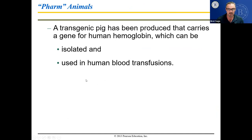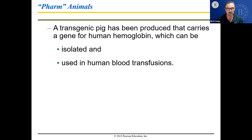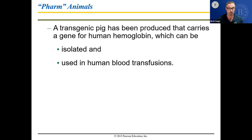A transgenic pig has been produced that carries a gene for human hemoglobin, which could then be used for blood transfusions. The idea is you could have synthetic blood with actual human hemoglobin. Not enough people donate blood, so what if you could get pigs to produce human hemoglobin, make that into artificial blood, and save a lot of lives that way?